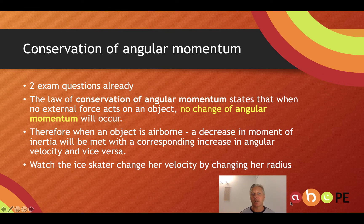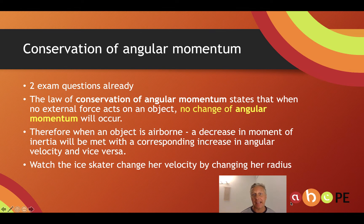In order to land, gymnasts need to slow down, so they will untuck — increasing their moment of inertia by laying out. That slows their angular velocity, but their angular momentum remains the same until they hit the ground.